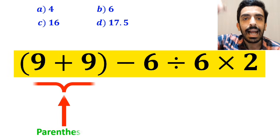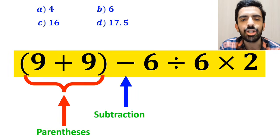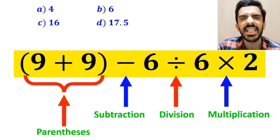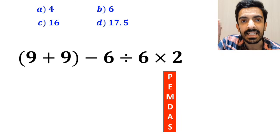As you can see on the screen, at this expression, first we have a parenthesis, then a subtraction sign, followed by a division, and finally a multiplication. To solve this question, we need to follow the PEMDAS rule step by step.